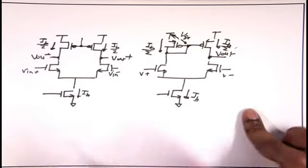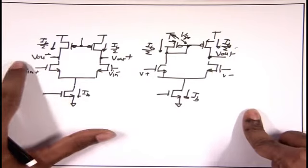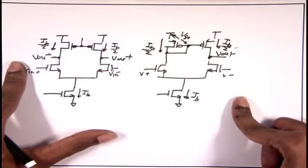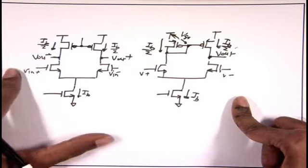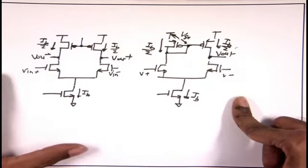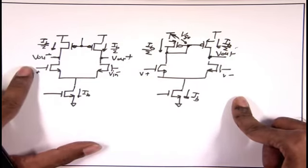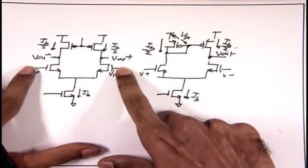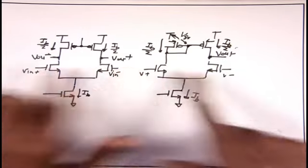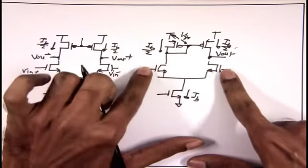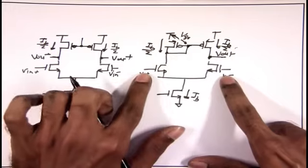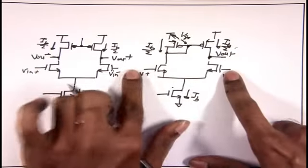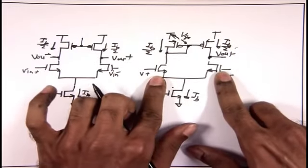Another important issue we discussed is common mode rejection ratio. We briefly discussed power supply rejection ratio, its impact on the resolution of the data we are trying to record, how it can corrupt and pollute our signal. Likewise we briefly discussed common mode rejection — an ideal differential amplifier should be able to fully reject common mode disturbance. In the second case this particular amplifier takes the output single-endedly and has a current source transistor. What can we expect about the common mode gain in these two cases?